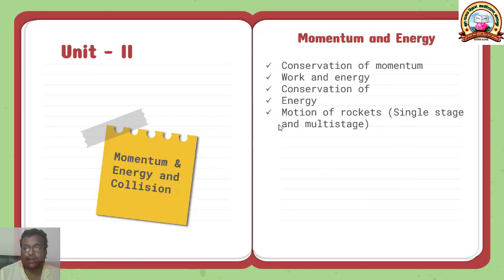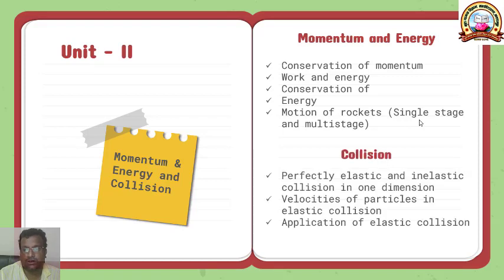In the second unit, first portion is dedicated to moment of inertia, where we will study conservation of momentum, work and energy, conservation of energy, motion of rockets, specially single stage and multi stage rockets. In the second part, we will go for collision, where we will see perfectly elastic and inelastic collision in one dimension. We have to derive an equation for velocities of particles in elastic collision only. Here you can see that we have only small discussion about inelastic collision, but the rest of the unit is focused only on elastic collision.